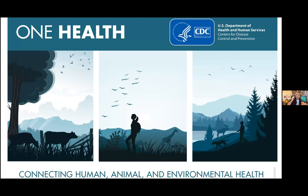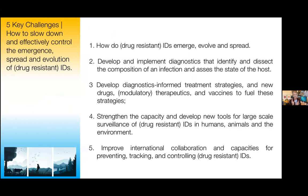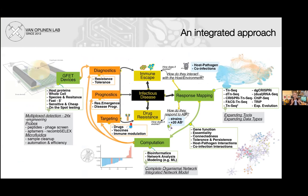Such a complex challenge can only be efficiently solved by taking an interdisciplinary, translational, and collaborative approach. There are at least five key problems in infectious diseases we need to address, and in my lab we work on the first three: understanding how drug-resistant infectious diseases emerge, evolve, and spread; developing new rapid diagnostics; and developing treatment strategies as well as new drugs. In my lab we aim to develop approaches to detect and predict infectious disease progression and the emergence of drug resistance, employing a mixture of tools and ideas from biology, chemistry, physics, and computer science. In the next 50 minutes or so I will tackle several examples for each of those.